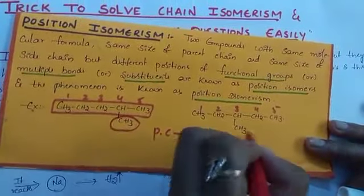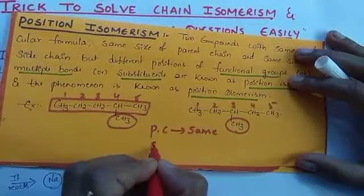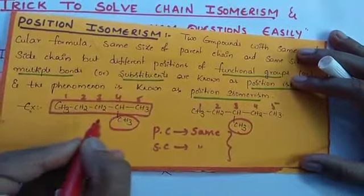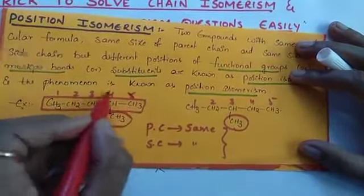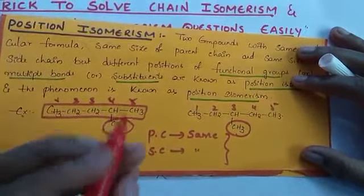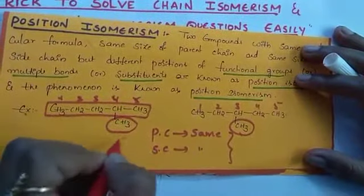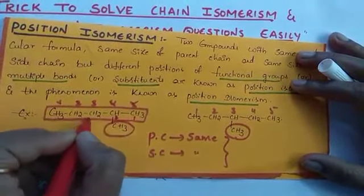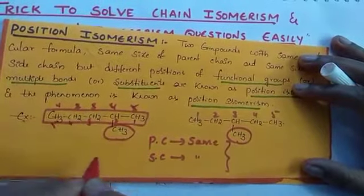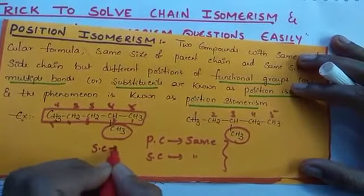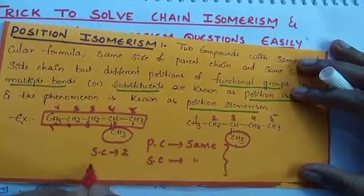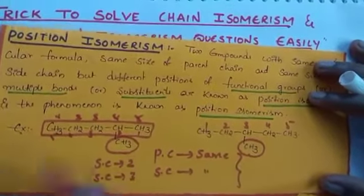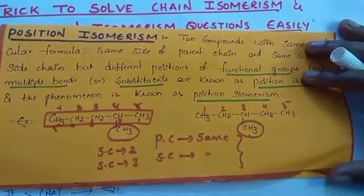The side chain is also the same — a methyl group in both. But the position is different: the side chain is at position 2 in one compound and position 3 in the other. According to IUPAC convention, the side chain should get the lowest number. Since both differ only in the position of the side chain, these two are position isomers.